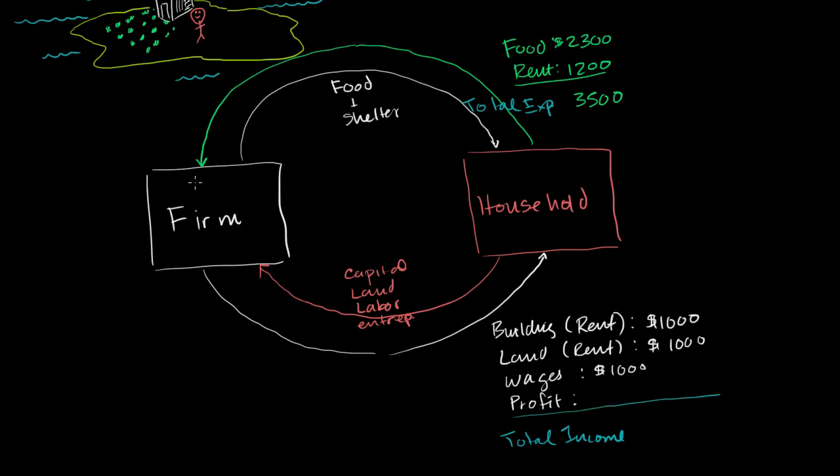So let's look at the firm's point of view. What is the total revenue that they are getting? For the firm, the total revenue, well the firm is getting $2,300 for the food, $1,200 for the rent, getting total revenue of $3,500 per year. Everything here is on an annual basis. Getting $3,500 per year. And what are the firm's expenditures? Well, the firm has expenses, and here we're going to be thinking in terms of economic profit because we're really just thinking about how much money is coming out of this firm, out of this business.